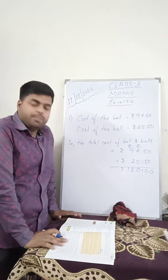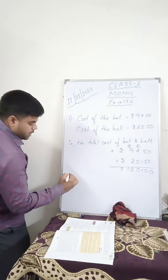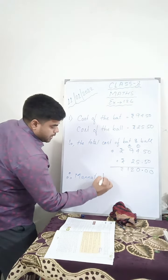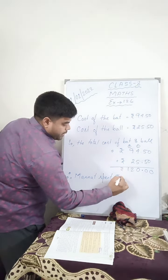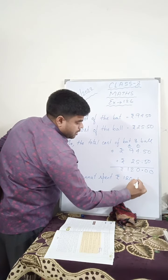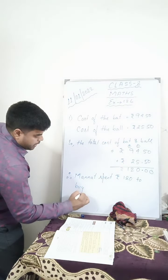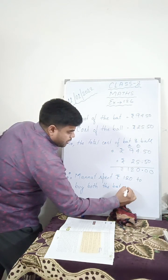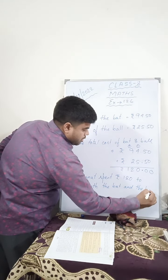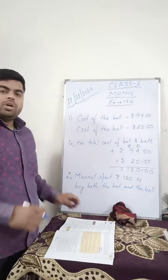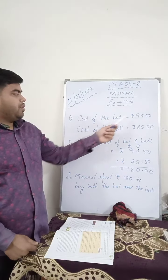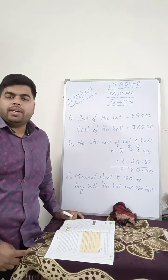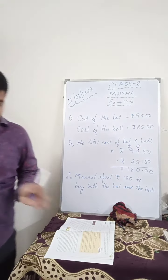So what did we find? How much money did she spend? Therefore, Mannat spent Rs. 120 to buy both the bat and the ball. I hope all of you have understood. She bought a bat for Rs. 94.50 and a ball for Rs. 25.50, and when we add them we get the total amount she spent. Please copy this down.